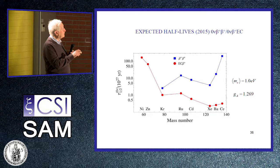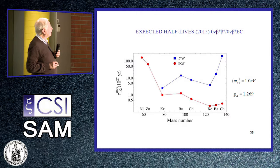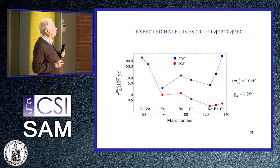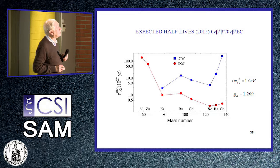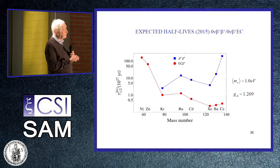For double positron or positron-electron capture, the half-lives are even longer — 10 to the 27 years. The best cases are once more xenon, barium, and cerium. People at KamLAND are planning to look for two positrons and see whether they can detect this process. Again, this is with no quenching. The Q value is smaller and scales like the Q value to the fifth power.